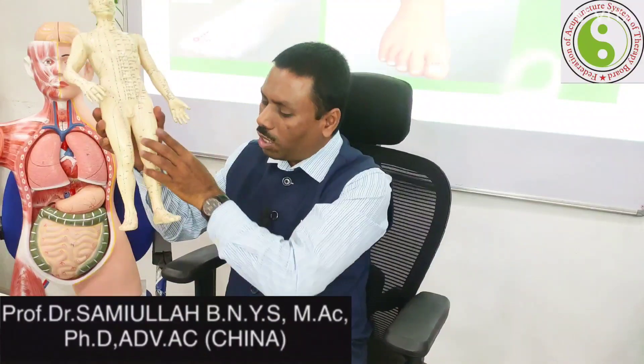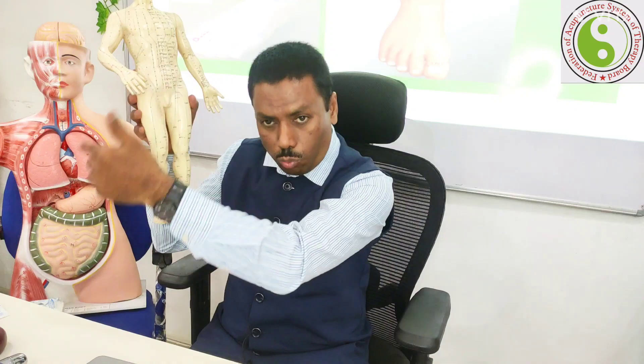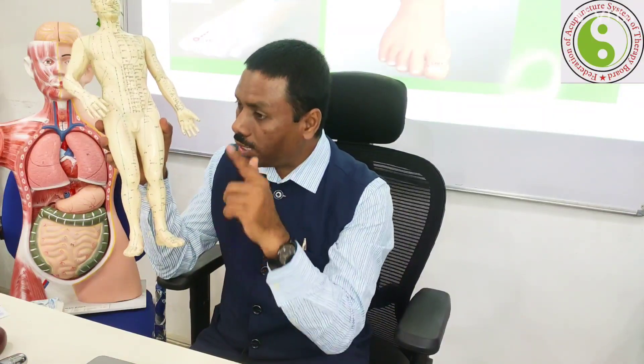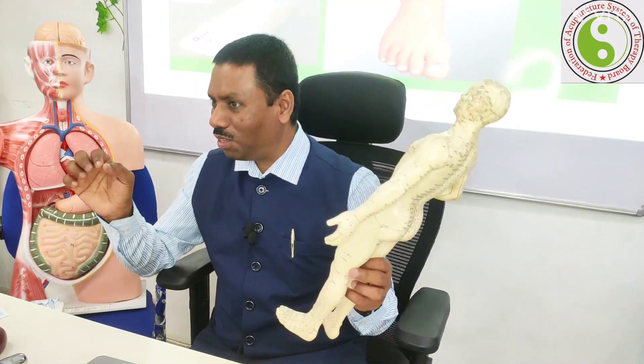This is the inside and this is the outside. Look at the inside — this is the Liver 1 point. Spleen 1 is on the outer side toward the second toe. The point is located on the great toe: Spleen 1 is on the medial side, known as Yinbai, and on the other end is Liver 1, known as Tatun.